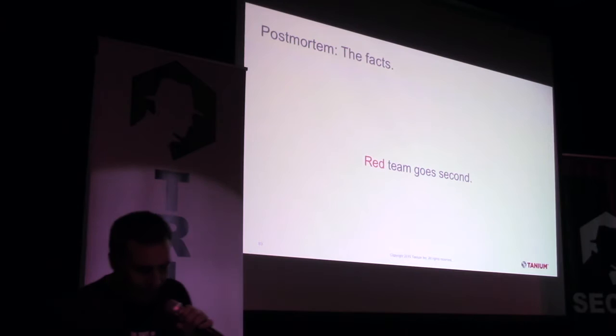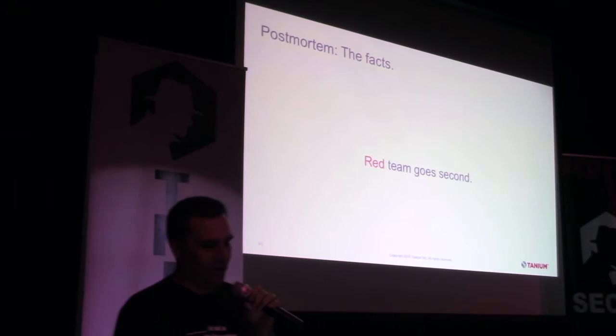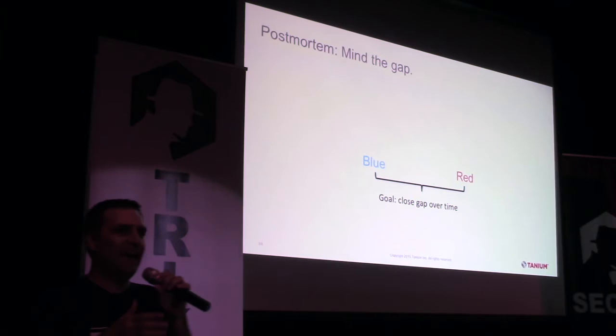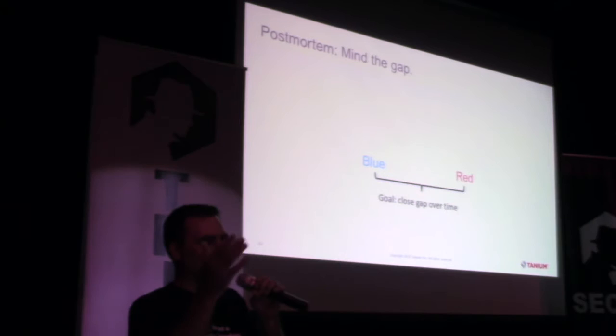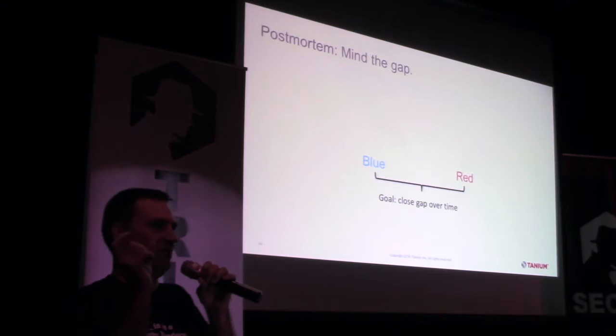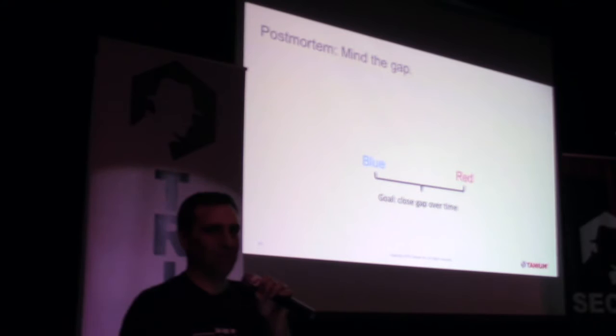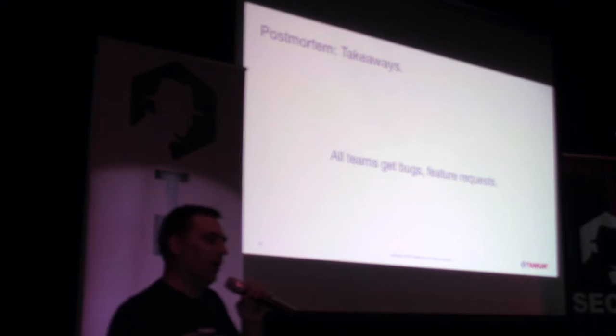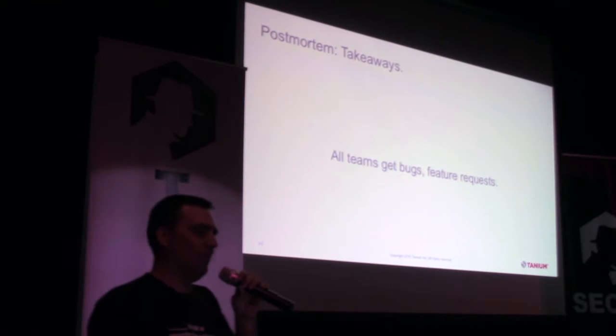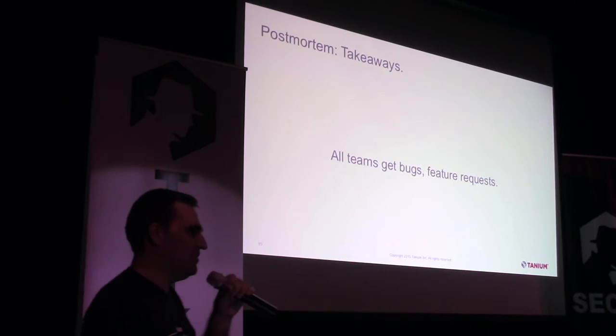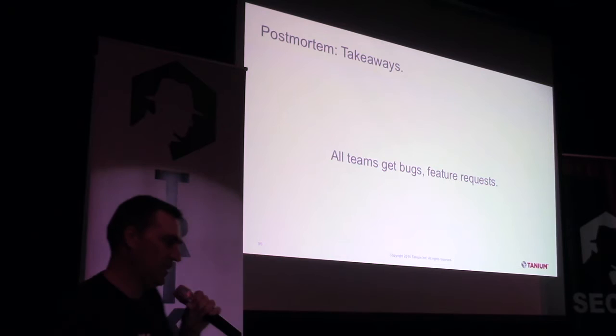The red team goes second and tells the factual account of what actually happened — all the things the blue team missed. There's going to be a gap between the blue team's story and the red team's story. The goal for the blue team is to close that gap as much as possible in the next engagement. All teams get bugs to take away: the red team gets bugs on improving evasion, the blue team gets bugs on detection gaps, and the stakeholders get bugs like 'we had a SQL injection we need to fix.'